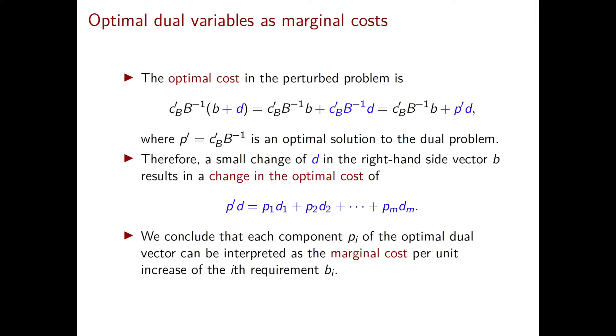Therefore, the optimal solution P for the dual problem can be used to understand how much the optimal cost will change if the right-hand side of the problem is slightly perturbed.